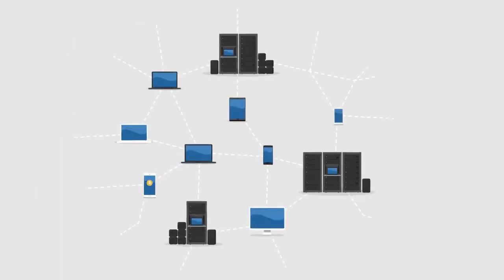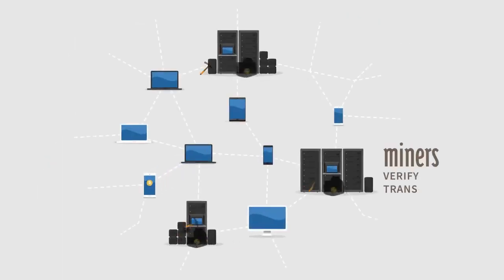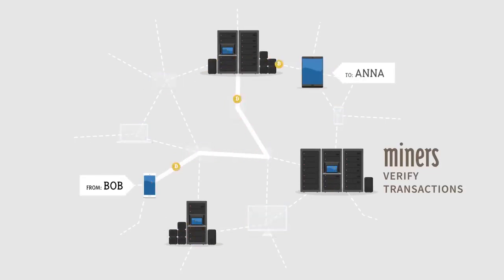The Bitcoin network is secured by individuals called miners. Miners are rewarded newly generated Bitcoins for verifying transactions. After transactions are verified, they are recorded in a transparent public ledger.